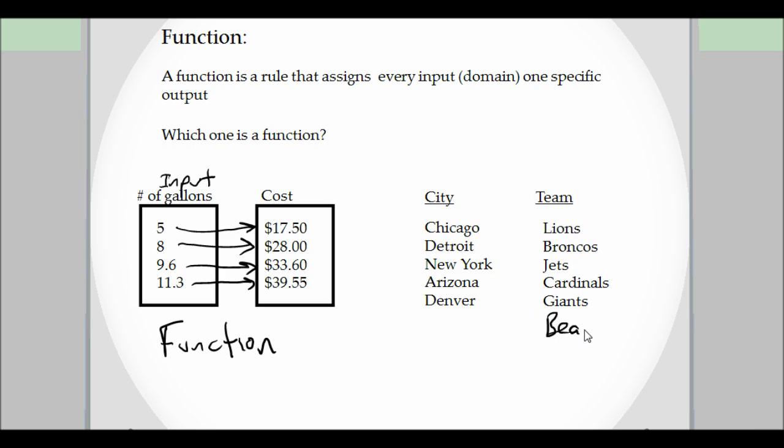Now if we go back here, Chicago went to the Bears, Detroit went to Lions, and so on. Our problem was that New York went to Jets and Giants. And because an input has two outputs, and we're only allowed one specific output, this has two outputs, so not a function.